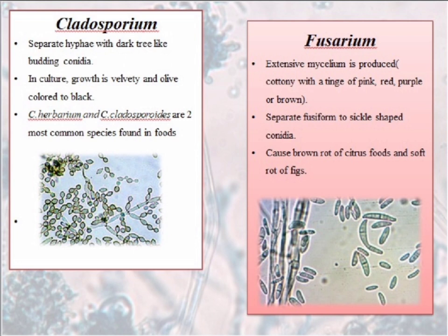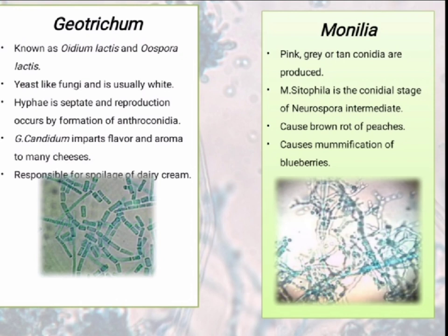Large brown rot of citrus fruits and soft rot of figs are caused by Fusarium. Now we talk about another genus, Geotrichum. It is known as Oedium lactis and Oospora lactis. They are yeast-like fungi and usually white in colour. Their hyphae are septate and their reproduction occurs by formation of arthroconidia. Geotrichum candidum imparts flavour and aroma to many cheeses. They are also responsible for spoilage of dairy cream.